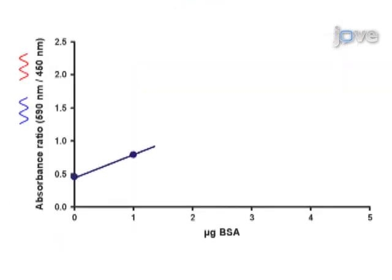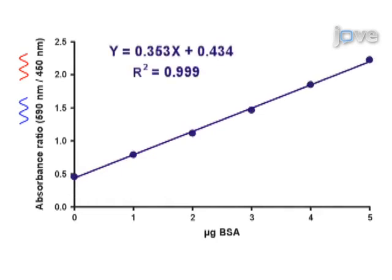The ratio of absorbance values at 590 nm and at 450 nm is strictly linear with protein quantity.